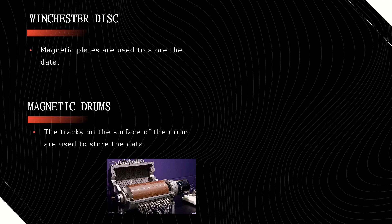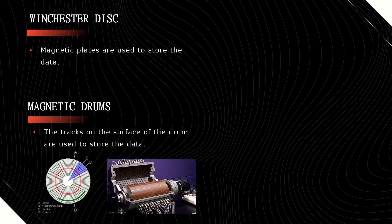Magnetic drums. It is a metal cylinder that is coated with magnetic iron oxide material. The surface of the drum is divided into a number of tracks and sectors. You just observe the red color part — those circles are tracks, and these tracks are used to store the data. It is also used to store a large volume of data. This drum is permanently fixed inside the device, so we can't physically remove it.